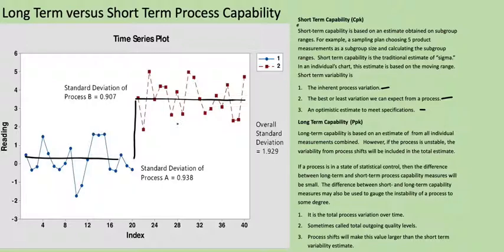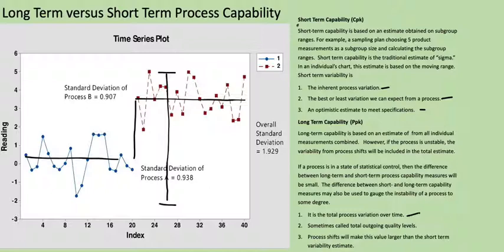Here we're actually increasing the distance between all the points from this level all the way down to here. If you calculate the standard deviation of everything, you get about 1.9 — roughly twice the standard deviation when you combine everything from that process versus the short-term estimate. When you combine everything together, it is the total process variation over time, sometimes called the total outgoing quality levels. And of course process shifts will make this value larger than the short-term variability estimate.